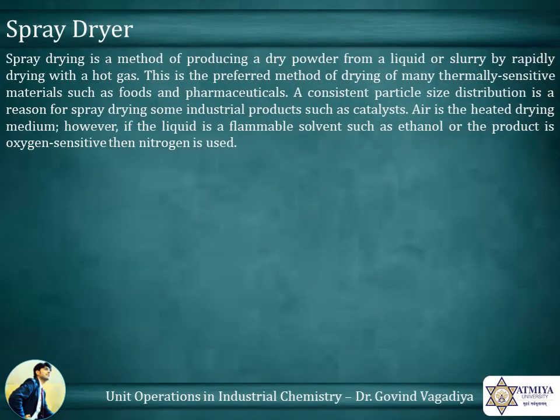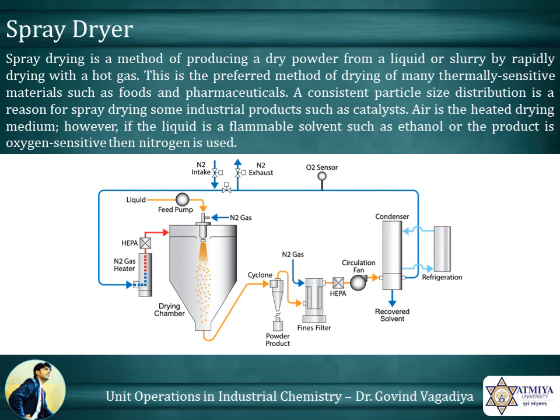Spray dryer: spray drying is a method of producing a dry powder from a liquid or slurry by rapidly drying with a hot gas. This is the preferred method of drying for many thermally sensitive materials such as foods and pharmaceuticals. A consistent particle size distribution is a reason for spray drying some industrial products such as catalysts. Air is the heated drying medium; however, if the liquid is a flammable solvent such as ethanol, or the product is oxygen-sensitive, then nitrogen is used.